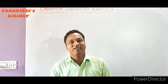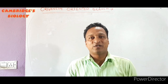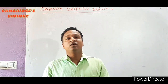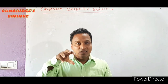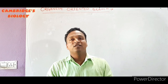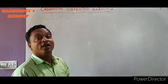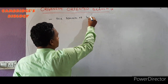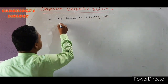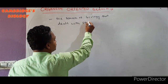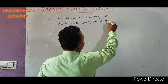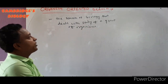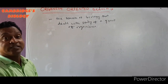Good morning everyone, welcome back to the Cambridge Plus Two Science Tutorial. Today we talk about organism-oriented branch. What is that? It is the branch of biology that deals with the study of a group of organisms — that is called the organism-oriented branch.